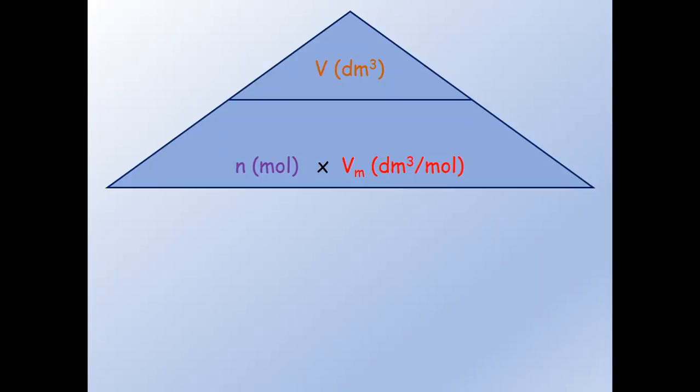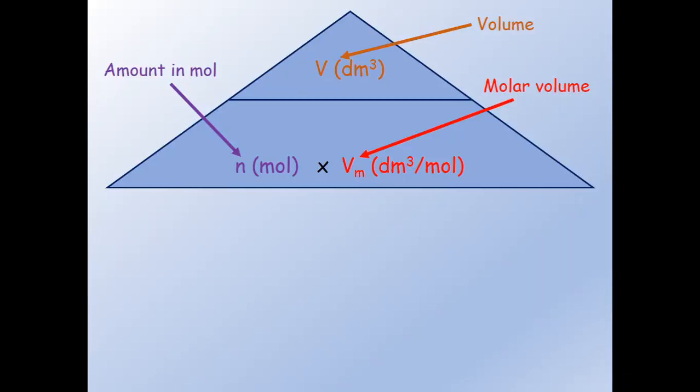This is the formula triangle for calculations involving the molar volume of gases. At the bottom we have the amount in mole n, times the molar volume Vm in decimetre cube per mole. At the top we have the volume in decimetre cube.